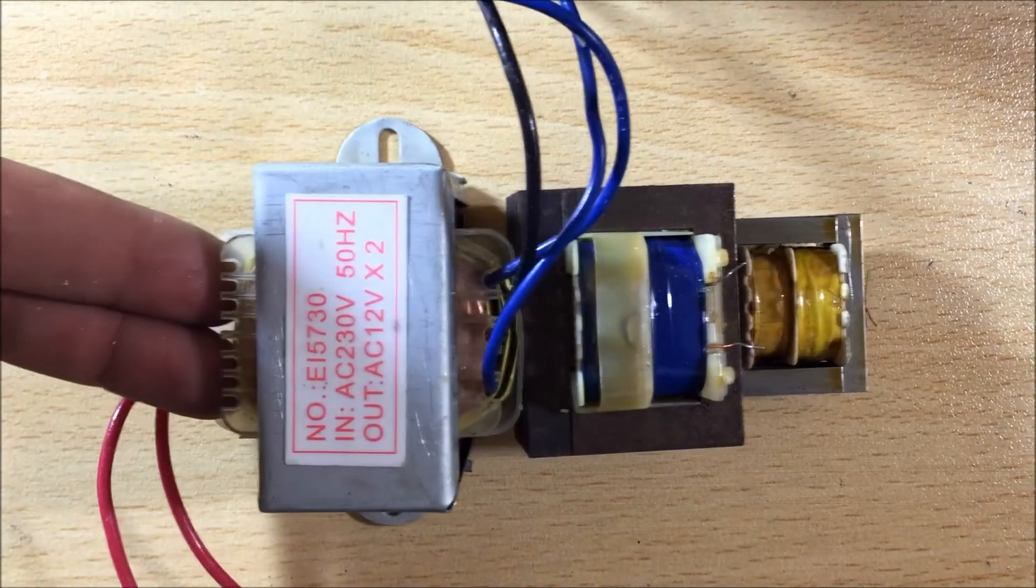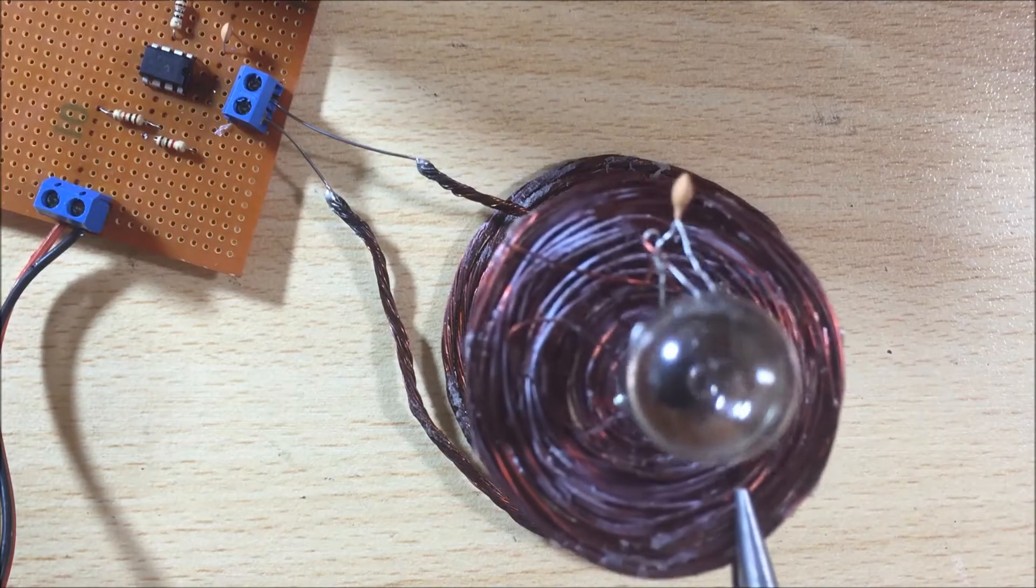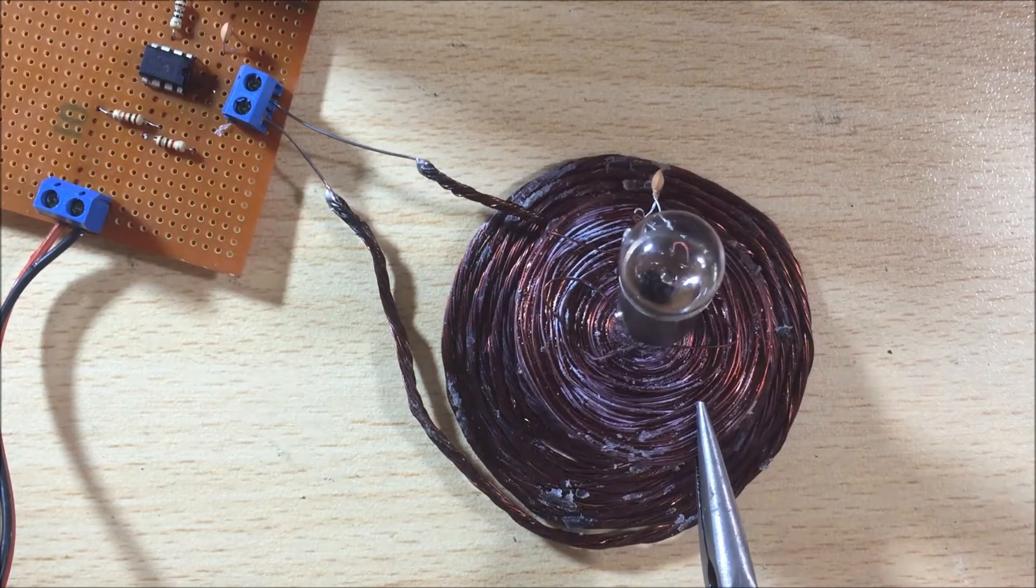A close relative to such wireless charger is the well-known transformer. Now the question is how we can alter the working behavior of this big transformer in order to transmit energy through the air. So, let's get started.